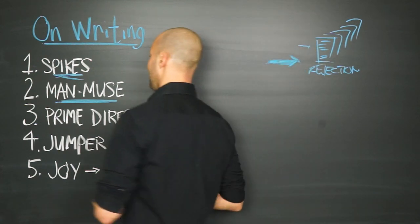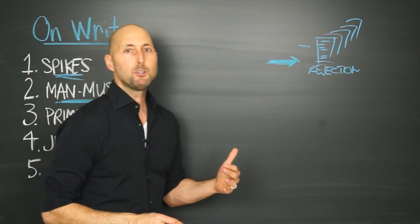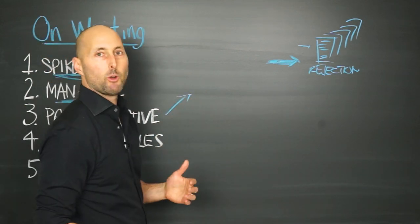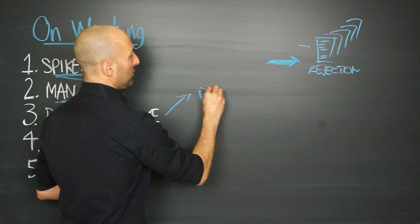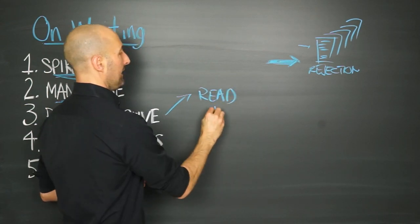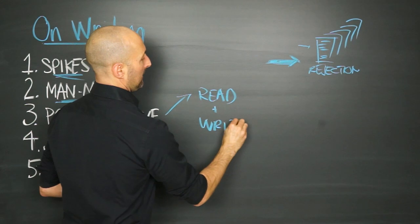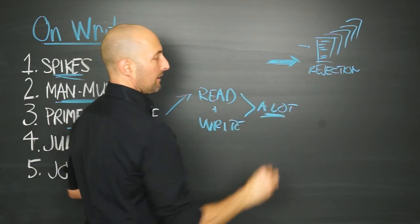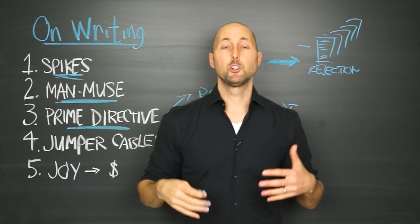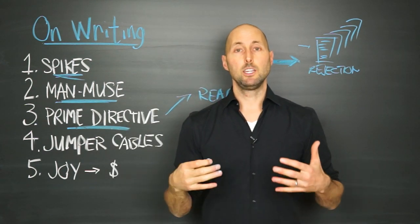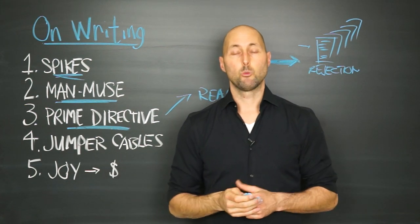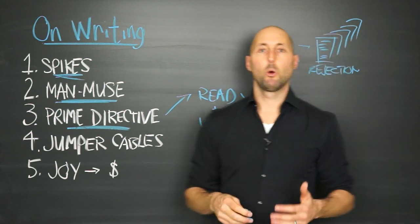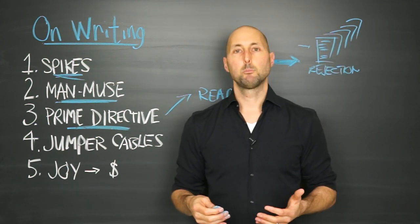Third big idea: the prime directive. So the prime directive for writers—if you want to be a good writer, you need to do two things. You need to read a lot and you need to write a lot. Not particularly complicated. You've got to read a lot. And as you're reading, you're learning your craft. You're seeing great prose and not-so-great writing. You're learning as you read. And then, of course, you need to do the work: showing up, reading a lot, writing a lot.